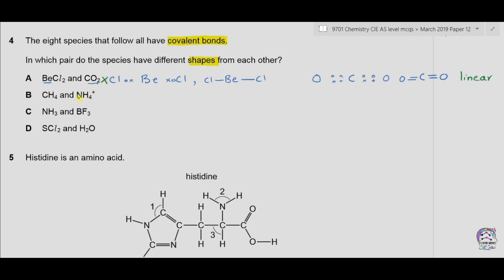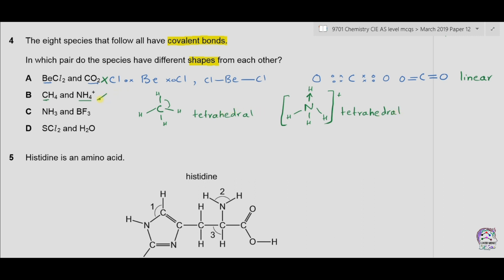Option B is CH4 and NH4+. In CH4, carbon makes four covalent bonds and the bond angle is 109.5 degrees — the structure is tetrahedral. In NH4+, nitrogen makes three covalent bonds with hydrogen and one coordinate covalent bond with H+, giving four atoms attached to the central nitrogen — so the structure is also tetrahedral. Both have the same structure, so option B is incorrect.